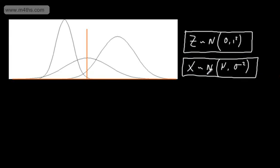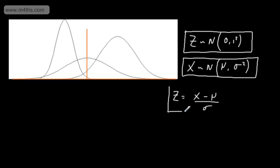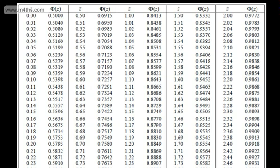If we want to convert a general normal distribution into a standard normal, we state that z is equal to x minus mu divided by sigma — or, if you prefer, z equals x minus the mean divided by the standard deviation. We simply plug this in, find the value we're looking for, and read it off from our standard normal table. Let's look at some examples.